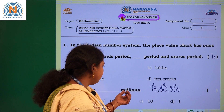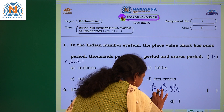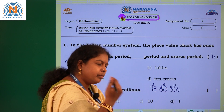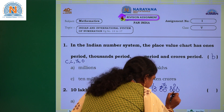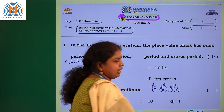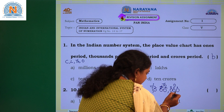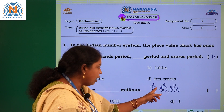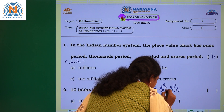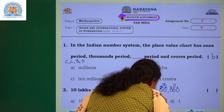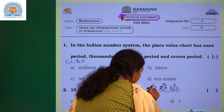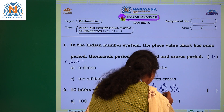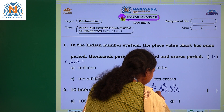Now convert this into the international number system. Let us remove the commas and re-separate using international grouping — placing commas after every three places. In the international system, after the ones period comes the thousands period, which has thousands, ten thousands, and hundred thousands places.